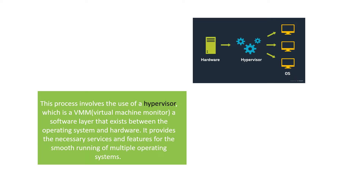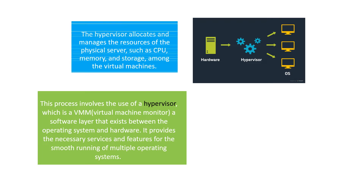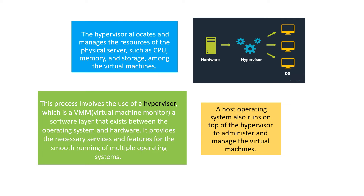The hypervisor provides the necessary services and features for the smooth running of multiple operating systems. As there are many guest operating systems running on the host operating system, the hypervisor allocates and manages the resources of the physical server — such as CPU, memory, and storage — among the virtual machines. A host operating system also runs on top of the hypervisor to administer and manage the virtual machines.